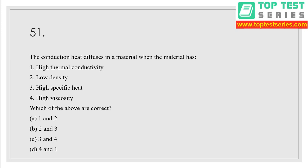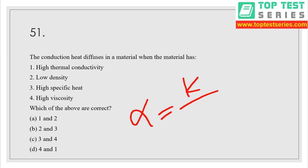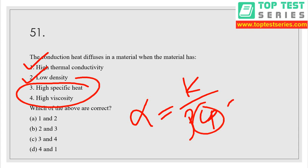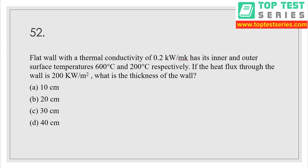Question number 51: conduction heat diffuses in a material when the material has high thermal conductivity, low density, and high specific heat. Thermal diffusivity alpha = thermal conductivity / (density × specific heat). High viscosity is not a relevant term — there is no viscosity in this formula. Therefore option A is the correct answer.